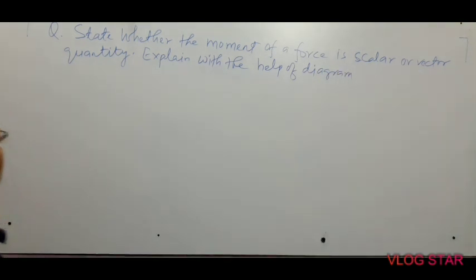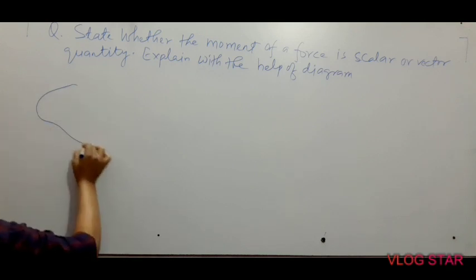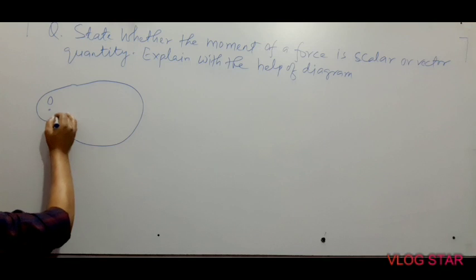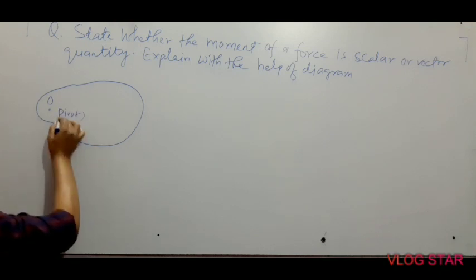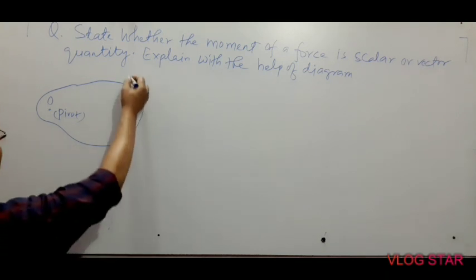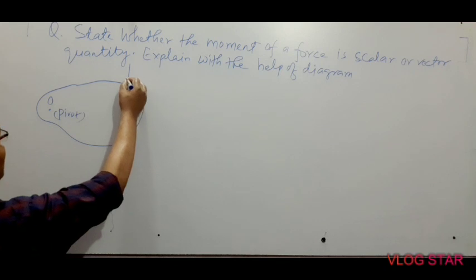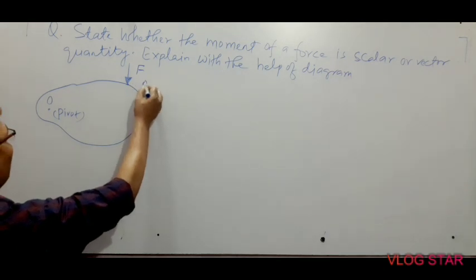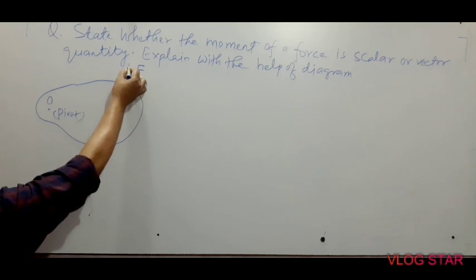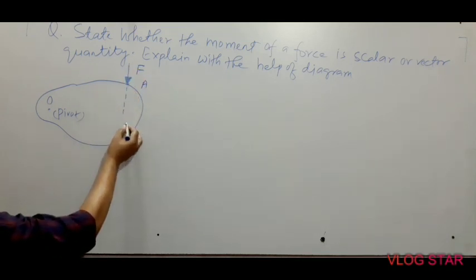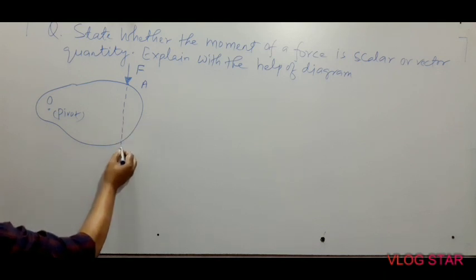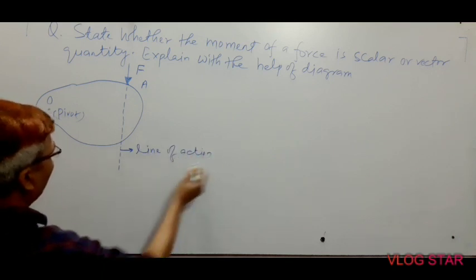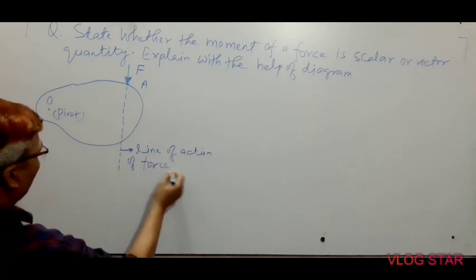The diagram is as follows. Suppose there is a rigid, stationary, pivoted object, and the point O is the pivot. Suppose one force is acting, and the magnitude of the force is F, and A is the point of application. Then the line of action of the external force will be along this direction — this is the line of external force, and the force here is F.